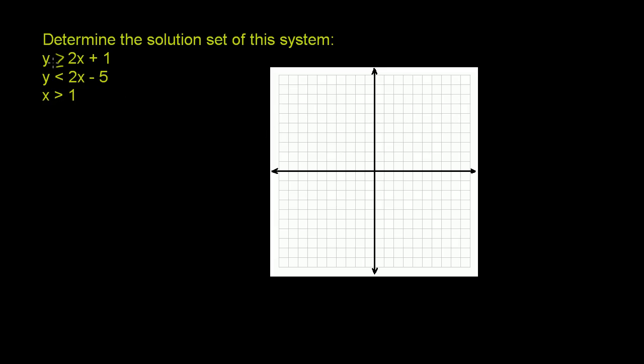So let's first graph y equals 2x plus 1, and then that includes this line and all the points greater than that as well. The y-intercept right here is 1. If x is 0, y is 1, and the slope is 2. If we move forward in the x direction 1, we move up 2.